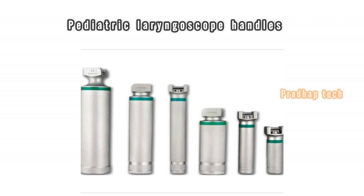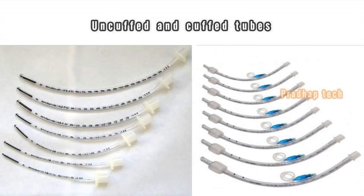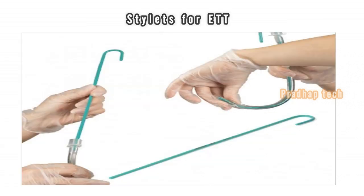Pediatric laryngoscope handles. Laryngoscope blades — multiple types and sizes. Uncuffed and cuffed tubes, one size smaller and larger than calculated. Stylets for ETT.